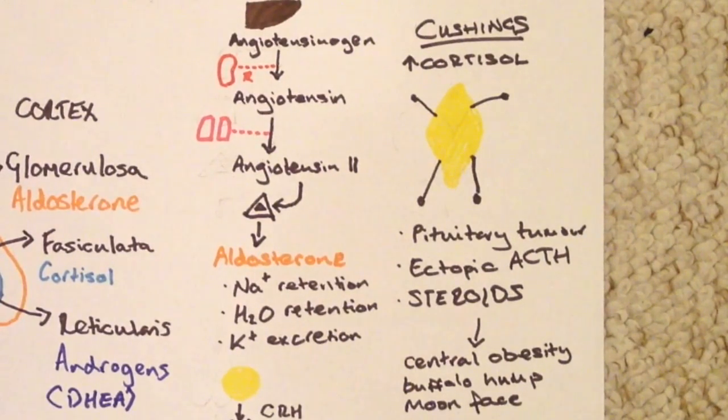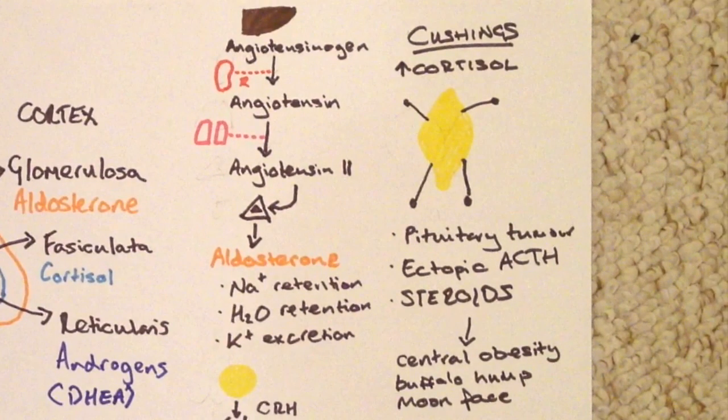A couple other terms I find useful for remembering is a buffalo hump - this is when patients get a fat pad on their back - and a moon face, and this is caused by fat redistribution and fat going to their face. These aren't terms you'd want to use in front of patients, but are certainly a useful way to remember the consequences of Cushing's.